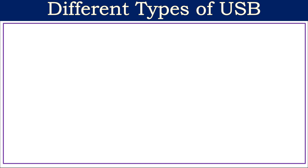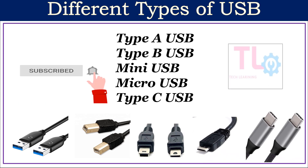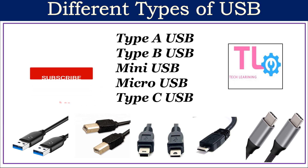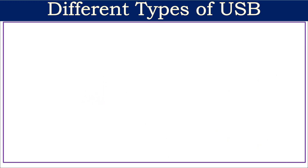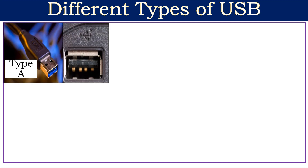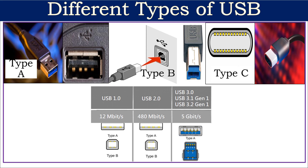In this video we will discuss the different types of USB cables like Type A, Type B, Mini, Micro, and Type C USB cables. Based on the physical design of connectors and ports, there are three types: USB Type A, USB Type B, and USB Type C. Based on functionality, there are also three versions: USB 1.0, USB 2.0, and USB 3.0.